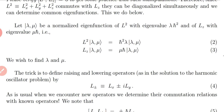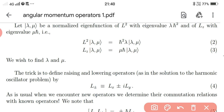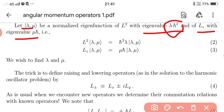Let |λ,μ⟩ be a normalized eigenfunction of L² with eigenvalue λℏ², and of Lz with eigenvalue μℏ. This is the eigenfunction in ket notation, and these are the respective eigenvalues. We then need to find the unknown quantities λ and μ.